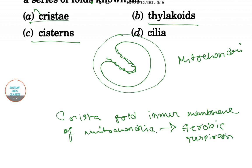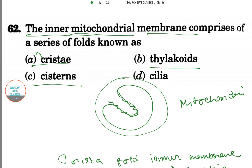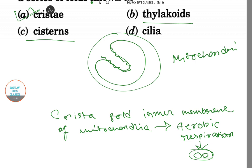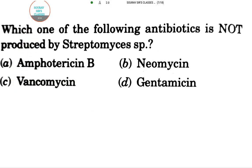This inner membrane of mitochondria forms cristae that helps in aerobic respiration. So aerobic respiration or aerobic cellular respiration occurs here. The only option that satisfies our question is cristae.